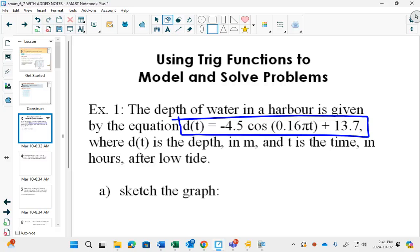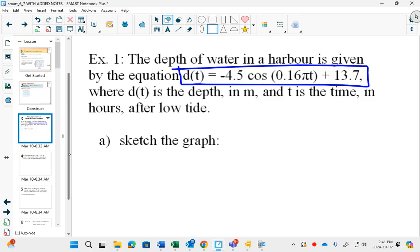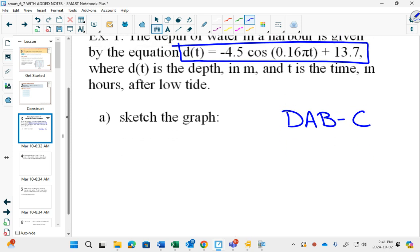This question says the depth of water in a harbor is given by this equation and we want to sketch the graph. So we're going to use our DAB-C technique. As you get better at DAB-C, first thing you're going to get better at is gauging where you're going to make your axis. So you're going to look at your G value, which is 13.7, and your A value, which is 4.5, and decide I don't need any negative Y values, don't really need any negative X values. Choose a place somewhere to be 13.7. That's our center line.